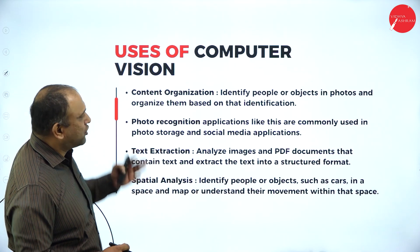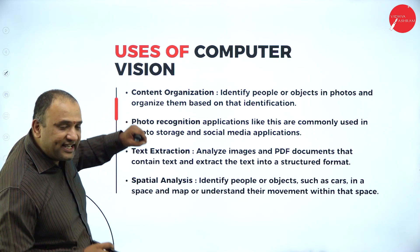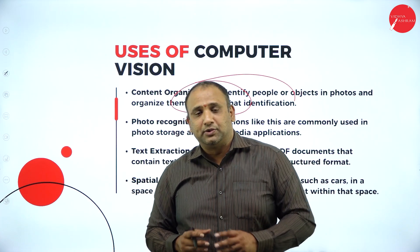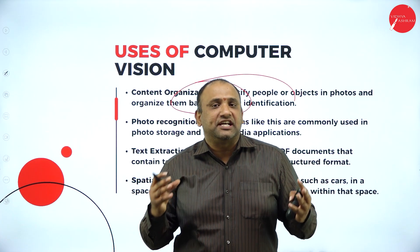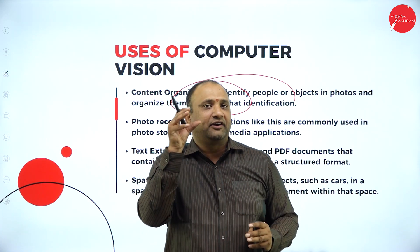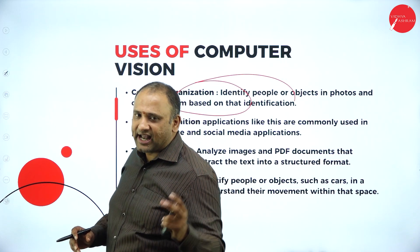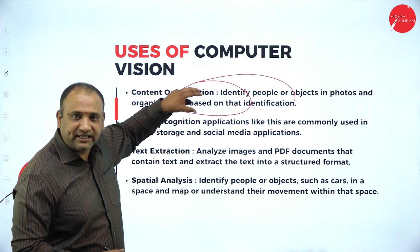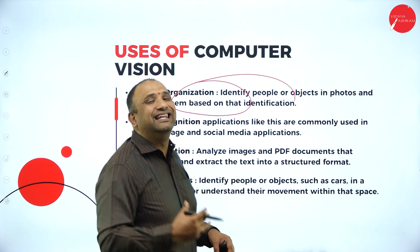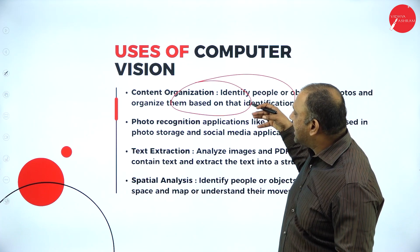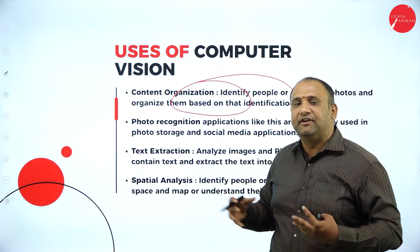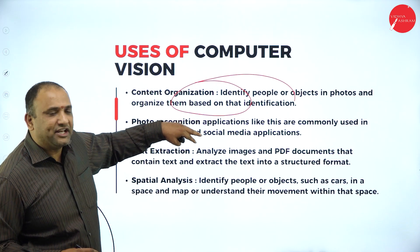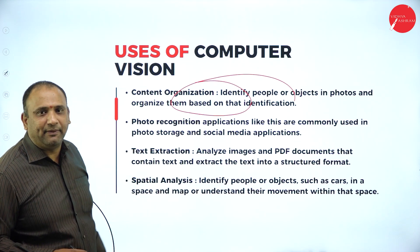When talking about content organization as a use of computer vision, the first thing is to identify people or objects in photos and organize them based on their identification. Similar to how technology plays a greater role in spy and thriller movies, using the power of AI to identify objects and people in photos is really amazing. Photo recognition applications are commonly used in photo storage, media storage applications, and other factors.